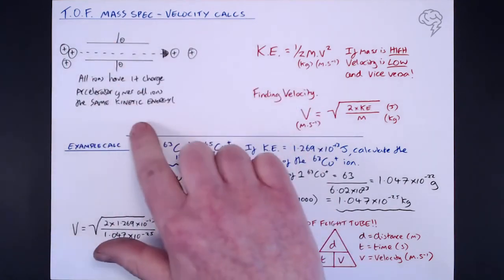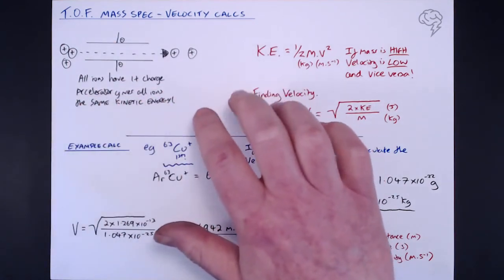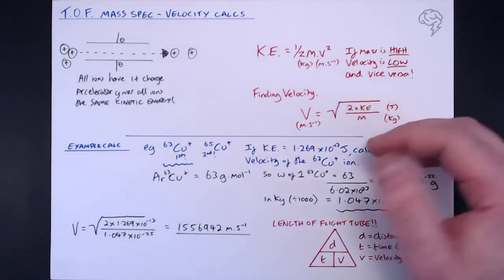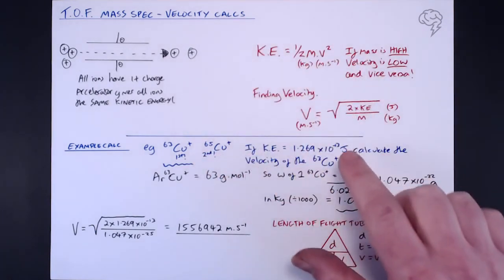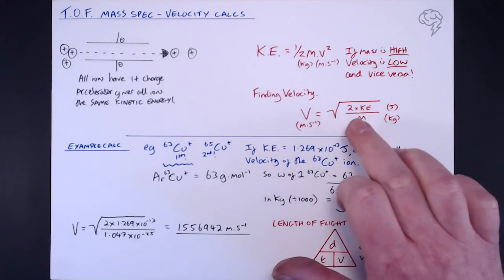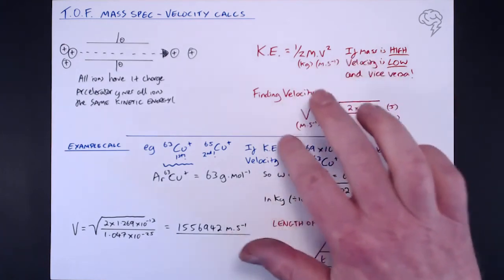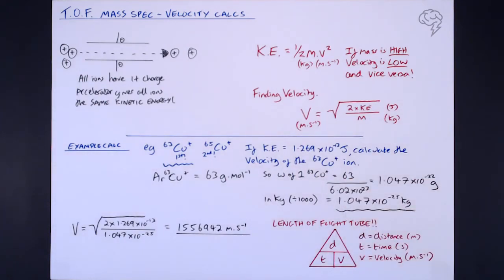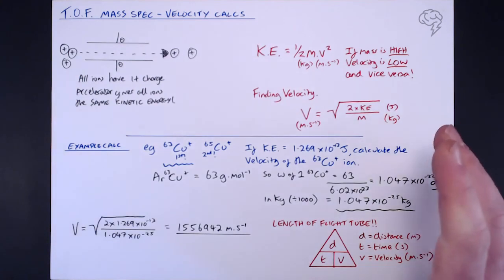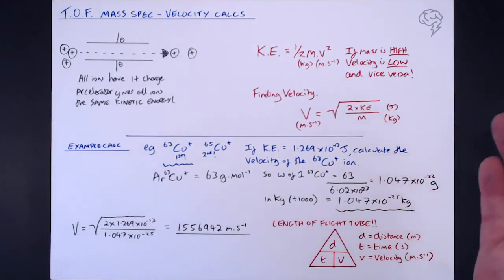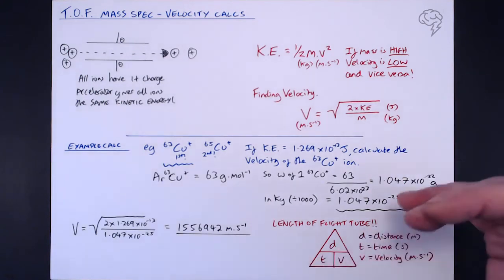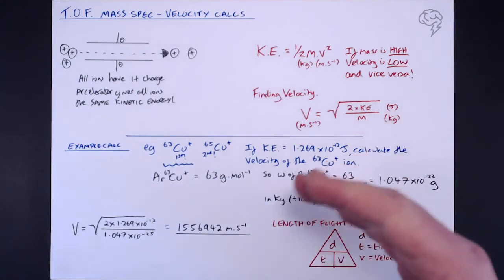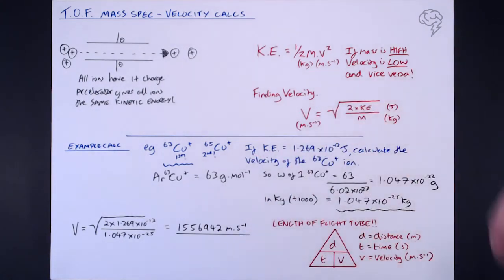To summarize: heavy ions and light ions are all given the same kinetic energy. Heavy ions don't have a great velocity because they're heavier; light ions have a greater velocity because they're lighter. The equation linking all three — kinetic energy, mass, and velocity — is v = √(2KE/m), and it's really useful to remember because they do like asking about finding the velocity. These calculations aren't very common but they are worth marks, so make sure you're prepared to answer these questions on the time-of-flight mass spectrometer.